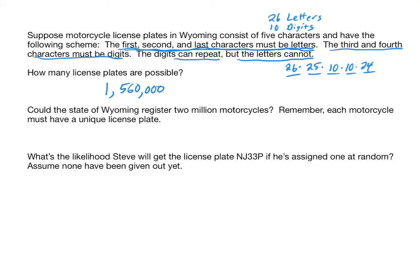So could the state of Wyoming register 2 million motorcycles? And remember that each registration has to be unique. We can't share social security numbers. We don't share license plate numbers. Each of them has to be unique. So if they want to be able to register 2 million different motorcycles, do they have enough? No. 2 million is greater than the 1.56 million that they can account for in the scheme. So if they know they're going to need to register 2 million motorcycles, they need to choose a different scheme. Maybe add on a sixth digit or sixth character. Maybe change it so that these can repeat. There's a variety of things you could do to make this number larger. So the answer here is no.